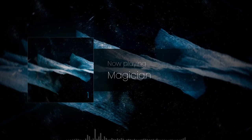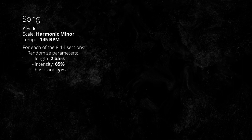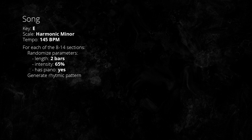Let's take a look at how song generation works in practice. Before doing anything else, the program chooses a random key, scale, and tempo — for example, the harmonic minor scale in the key of E at 145 BPM. Then it proceeds to generate 8 to 14 sections, an arbitrary number that results in a song 2 to 3 minutes long. For each section, a random section generator is chosen, which randomizes parameters such as section length, intensity, or whether it has piano. Then it proceeds to generate a rhythmic pattern, which is affected by the intensity setting.